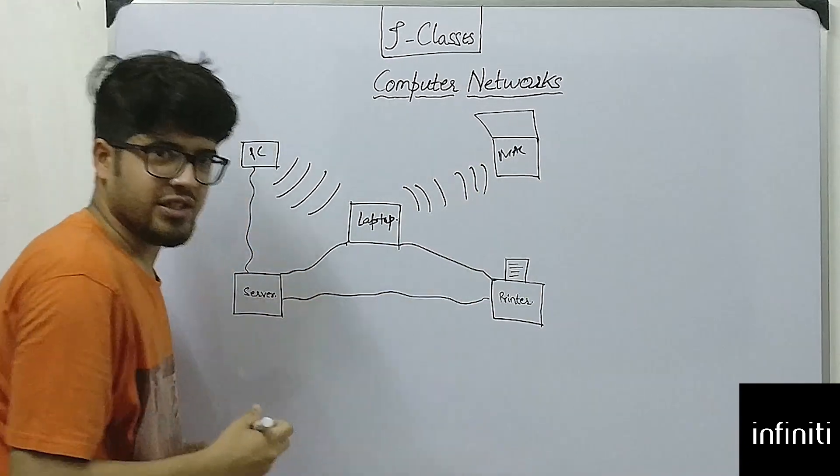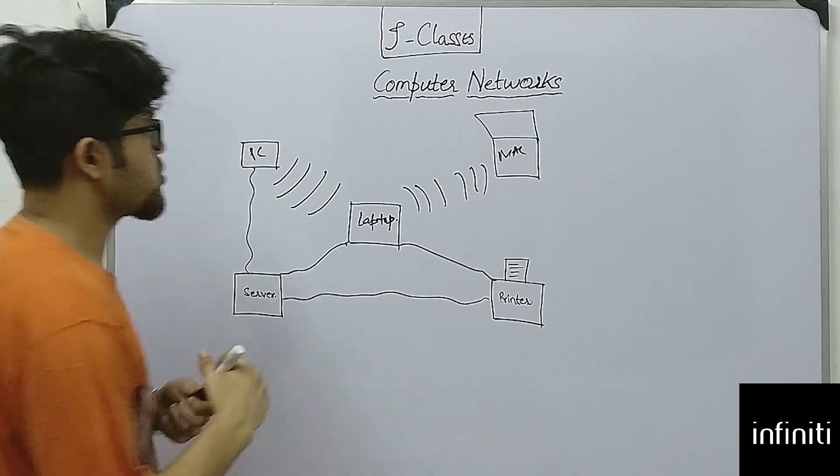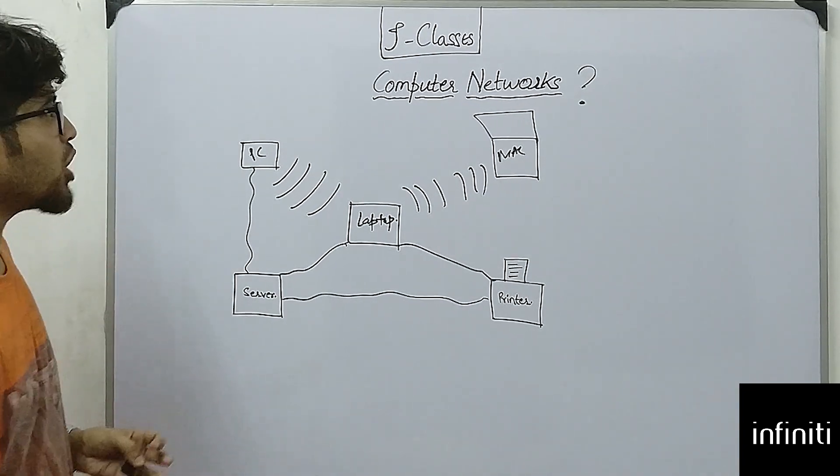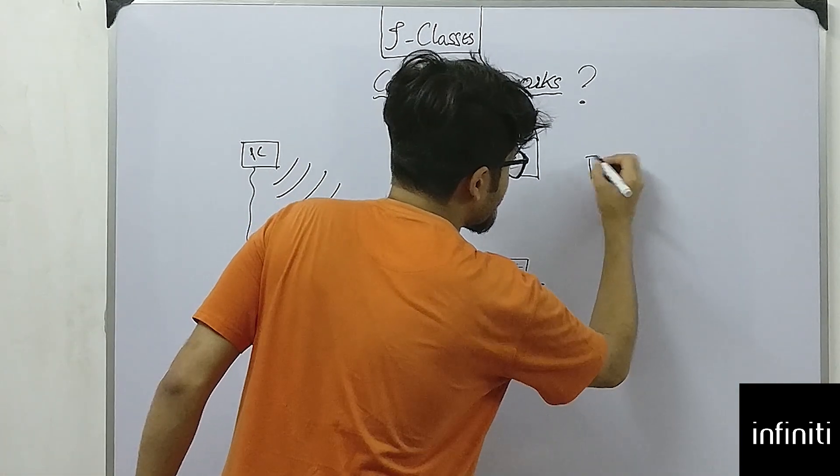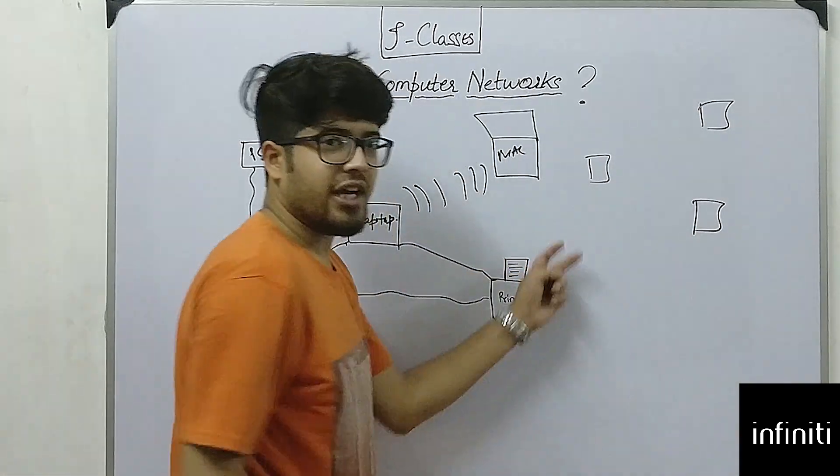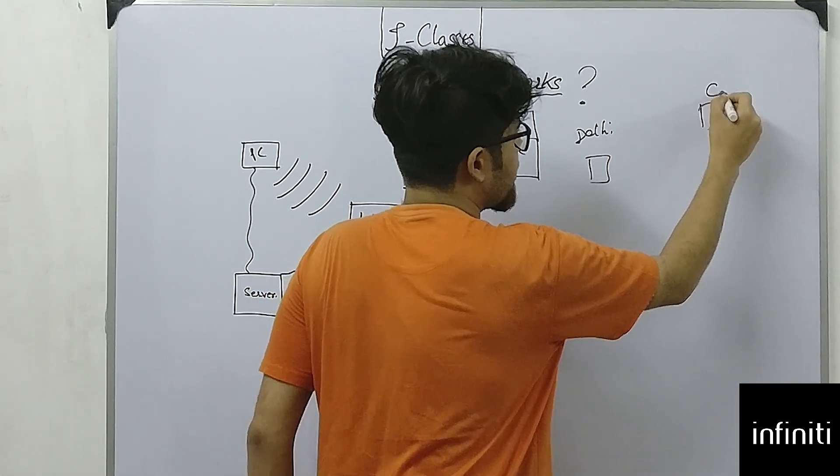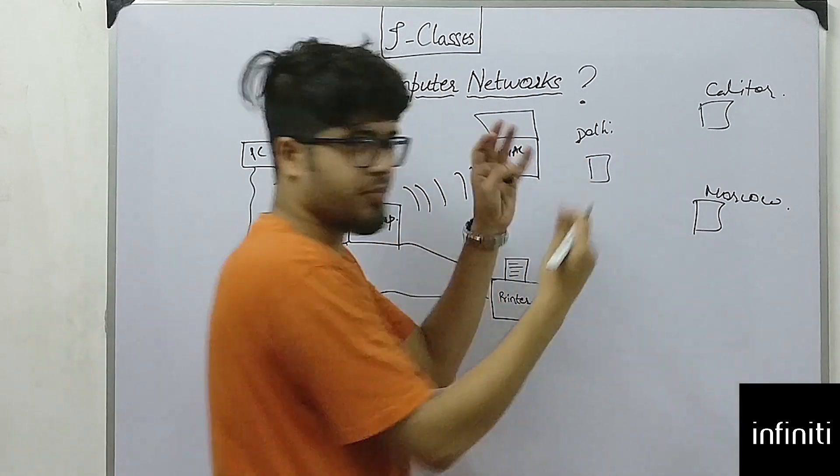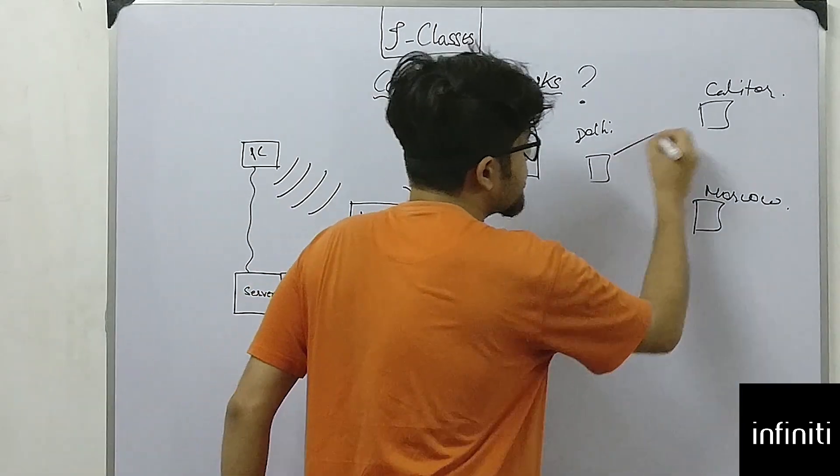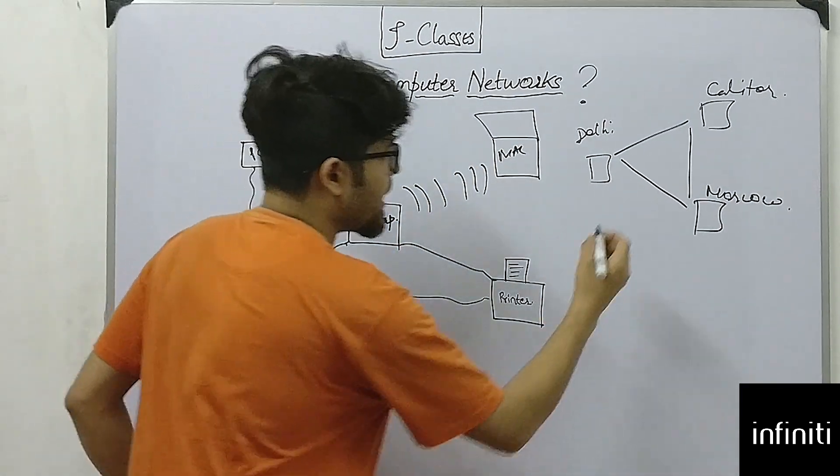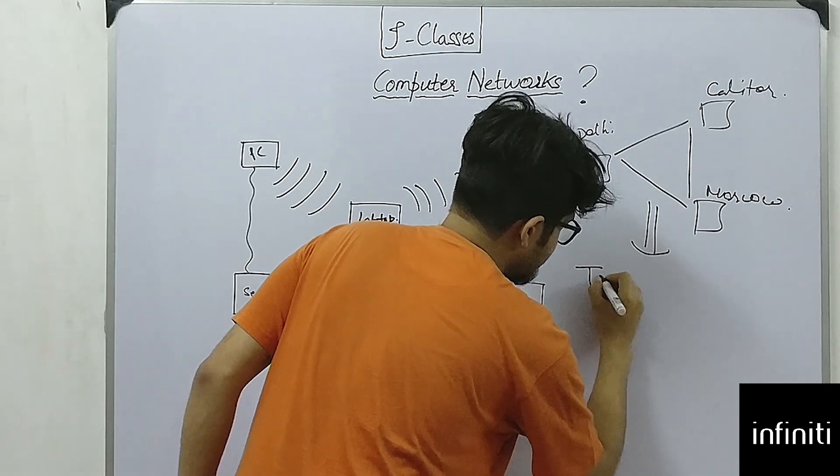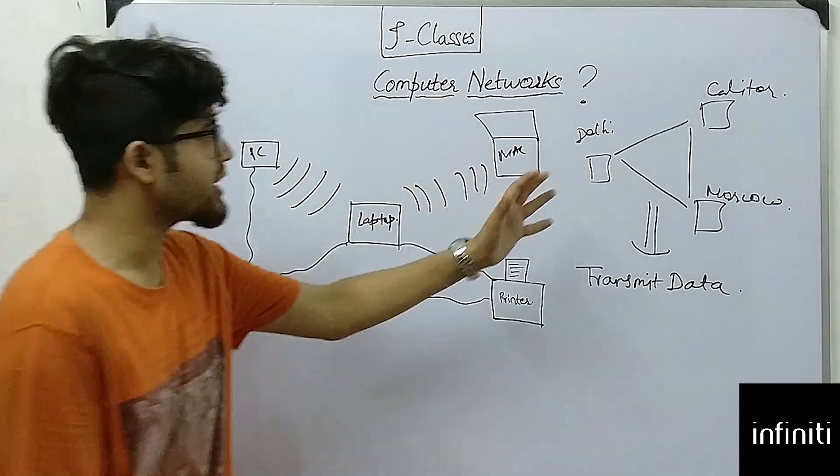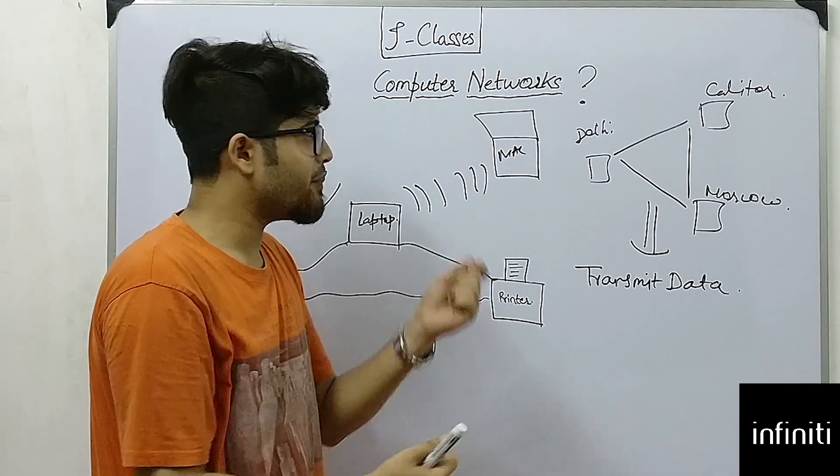So when we are dealing with networks, the first thing that comes to mind is why we need a network. The answer to that is because we need to share data. Nowadays people are connected over a wide range—someone sitting in a different city like Delhi, or someone in California, or someone in Moscow. They are working on a common project, so they need to connect through a network. The main idea is to transmit data. This data transmission can be bidirectional, that is both ways. Every node is connecting to each other and talking for the main reason of transmitting data.